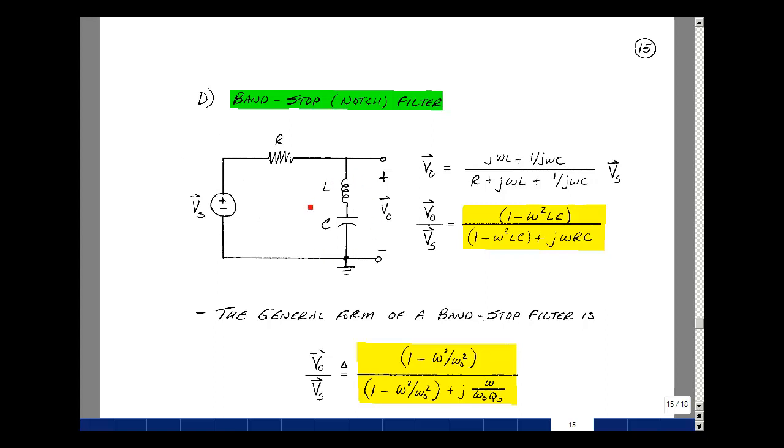Let's move the L and C across the load and solve for Vout over Vs in the frequency domain. Because this current is the same as this current, we have a voltage divider. This impedance is jωL, and this is 1 over jωC, divided by the sum of that with R. So R plus jωL plus 1 over jωC.